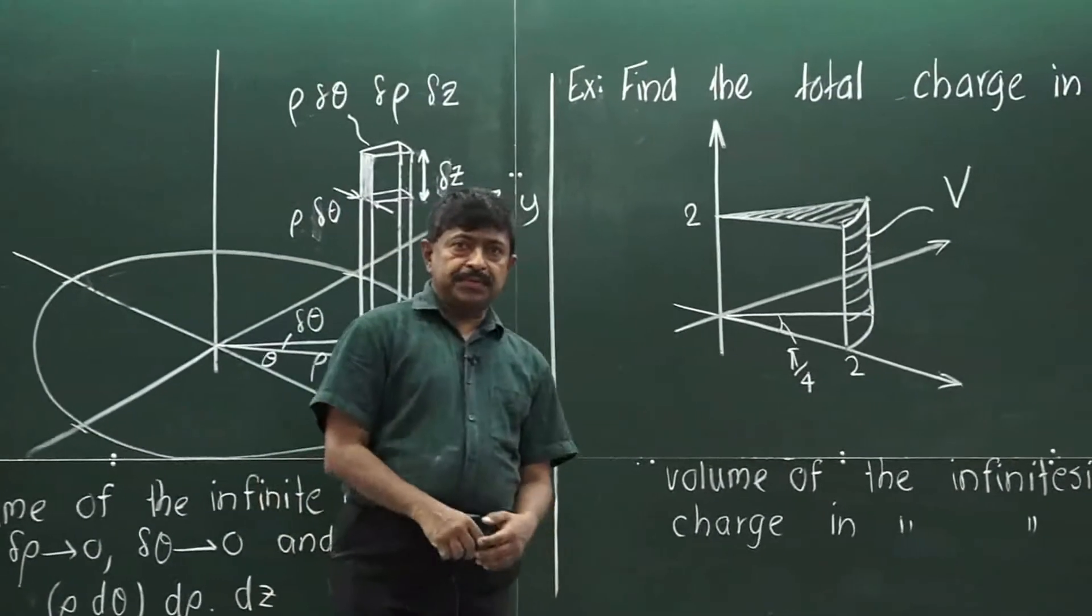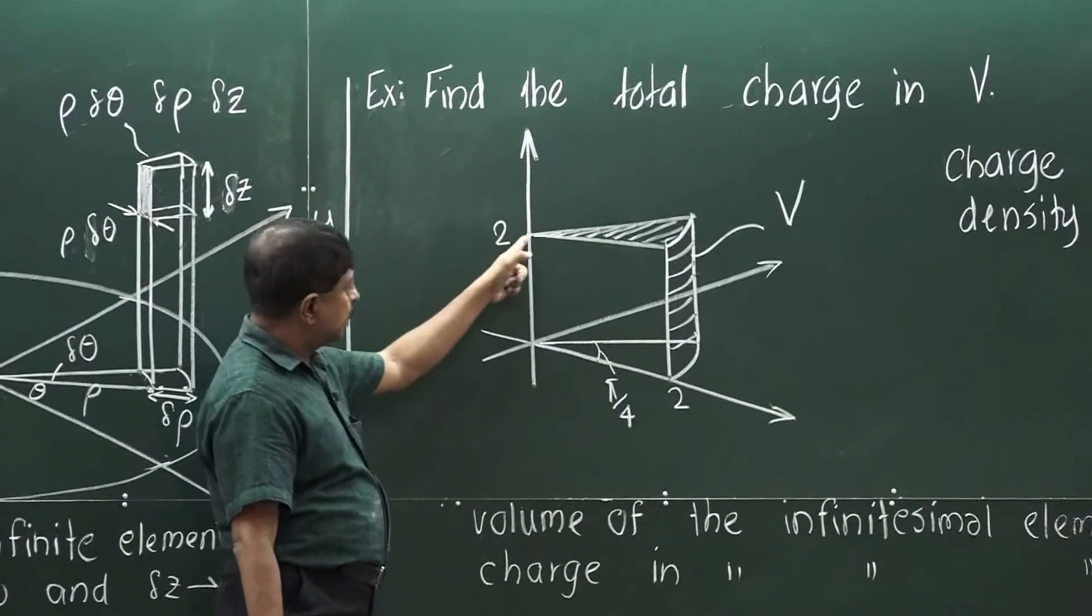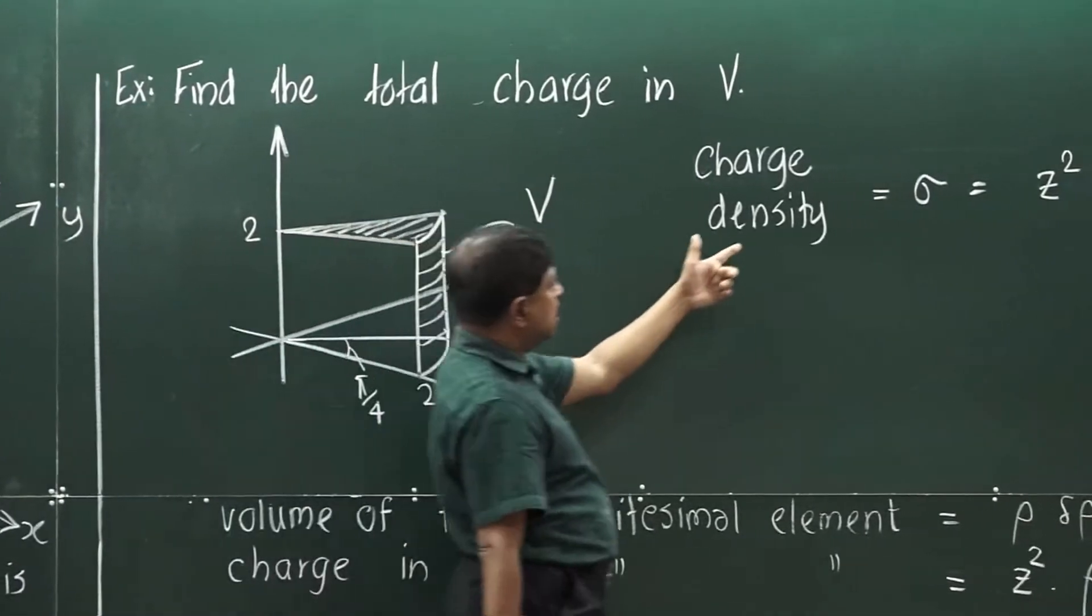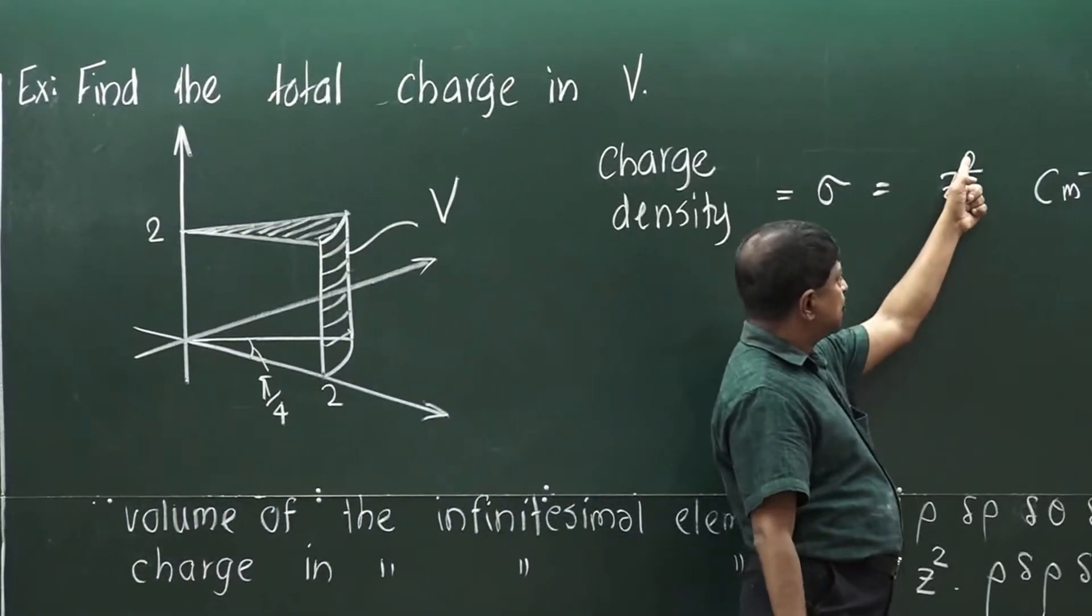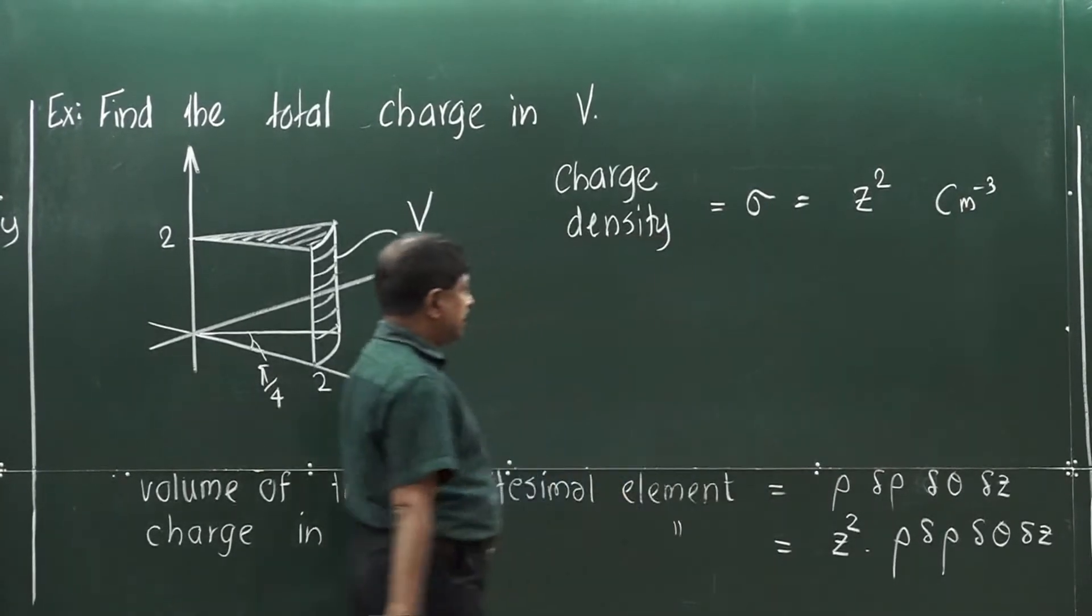Let us go through one more example. Here we find the total charge in this volume. The charge density sigma is given by z squared coulomb per cubic meter.